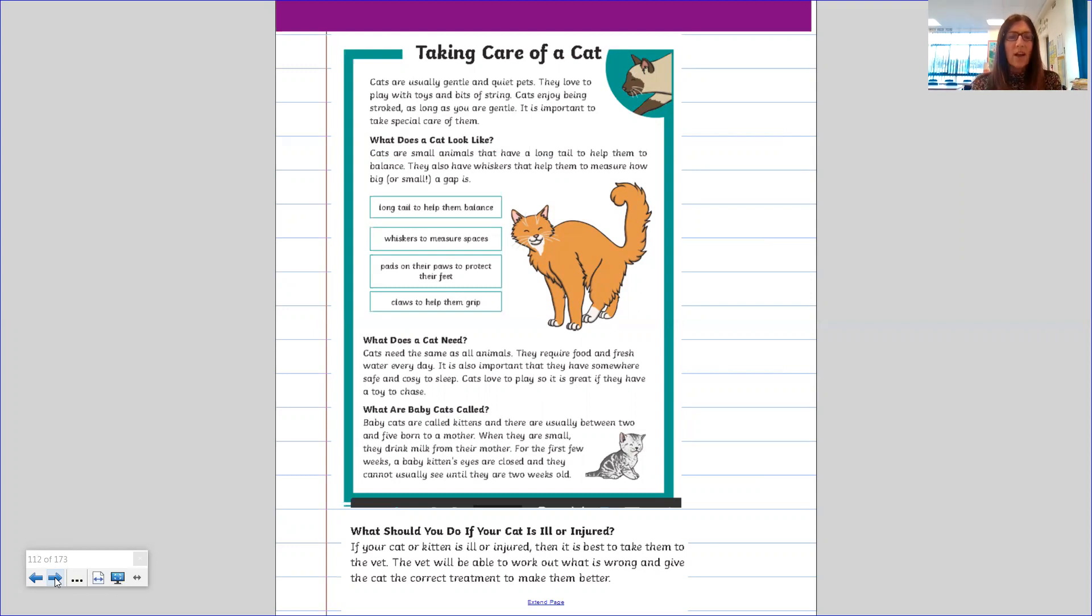What does a cat look like? Cats are small animals that have a long tail to help them to balance. They also have whiskers that help them to measure how big or small a gap is. So long tail to help them balance, whiskers to measure spaces, pads on their paws to protect their feet, claws to help them grip.